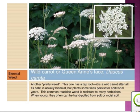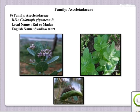When young, they often can be hand-pulled from soft or moist soil. This is a biennial weed. The next one is Rui or Madar; English name is Swallowwort; botanical name is Calotropis gigantea; family Asclepiadaceae. It is a weed also having religious uses.